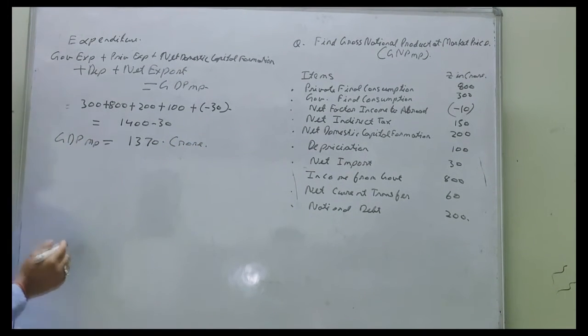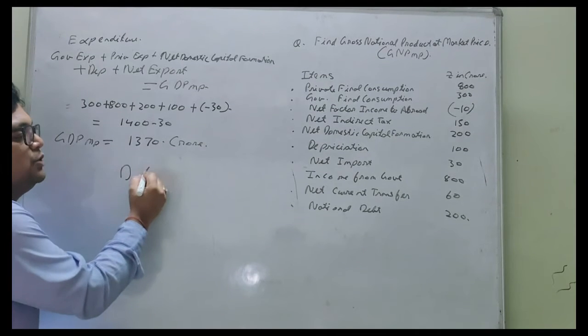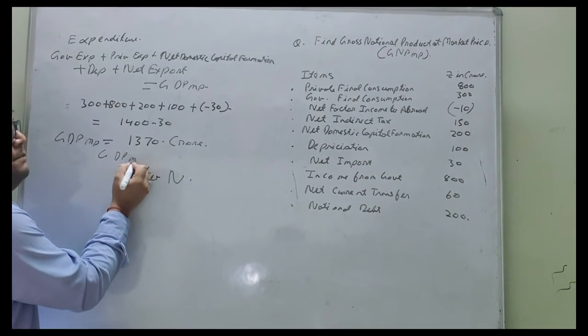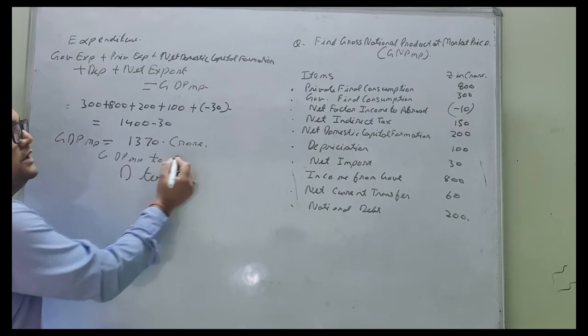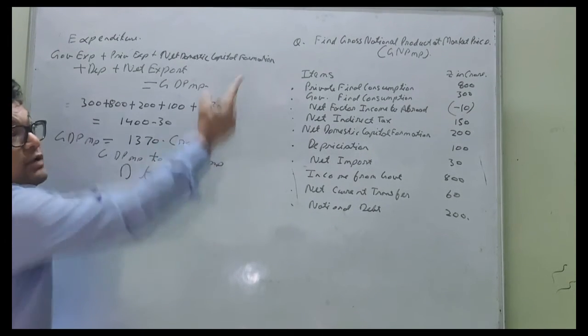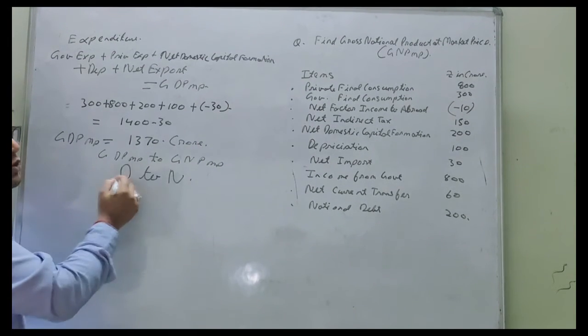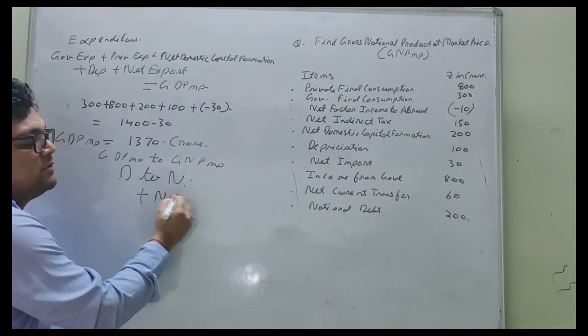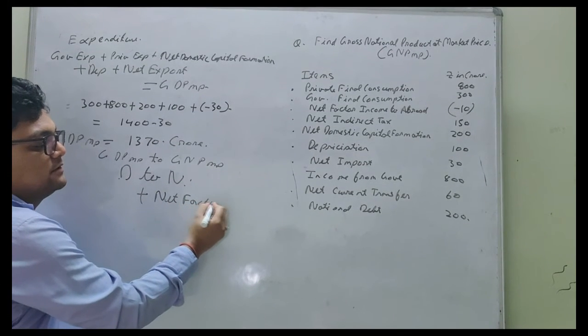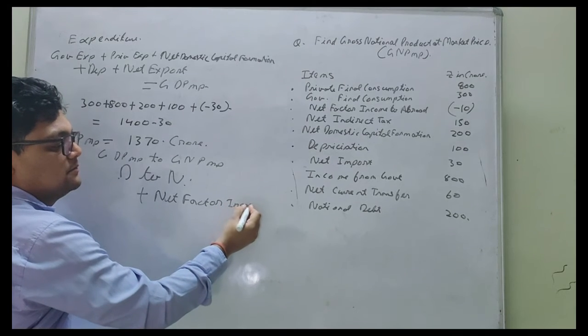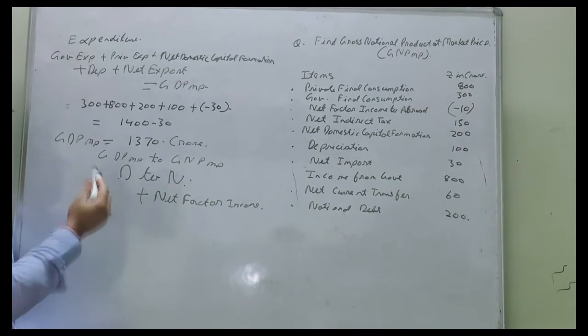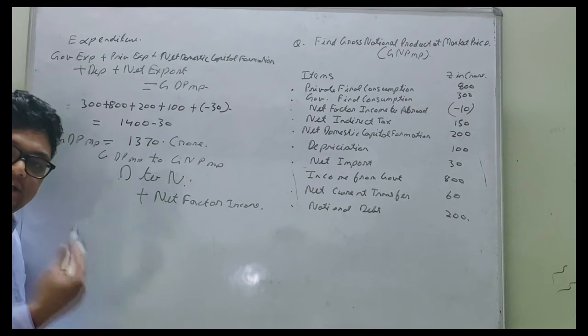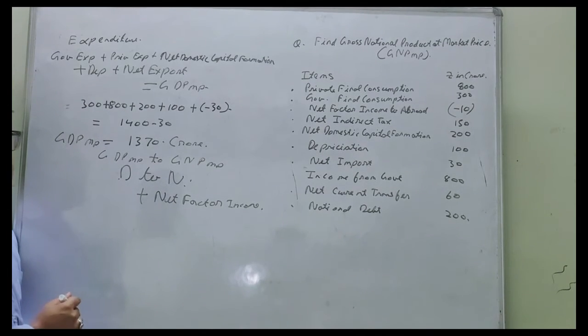Now, from D to N means GDP MP to GNP MP, as we have to calculate GNP MP. D to N, we just add net factor income from abroad. To get domestic to national, we just add net factor income from abroad. In each case, here we will also do that only.